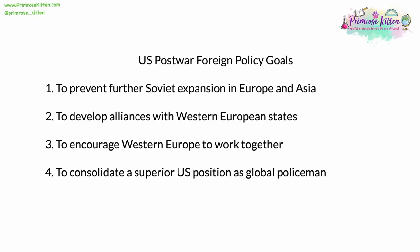The United States had four main foreign policy goals. The first was to prevent further Soviet expansion in Europe and Asia — the US feared the spread of communism into Western Europe, with countries such as Italy or the Netherlands, and further into Asia, perhaps into Mongolia, China, or even Japan. A second goal was to develop alliances with friendly Western European states such as France and the United Kingdom. A third goal was to encourage Western Europe to work together, to coalesce in terms of their economy and political systems, and to work towards a military alliance.